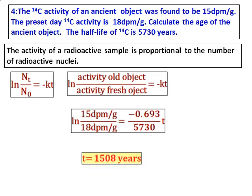Substitute all the values. The half-life is given. From the half-life, the value of k can be obtained. That's 0.693 divided by 5730, and get the value of t. That is the age of the sample.